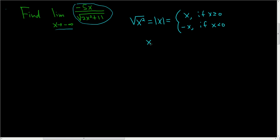In this problem, x is approaching negative infinity. That means that x is less than 0. So then the square root of x squared is actually equal to minus x.